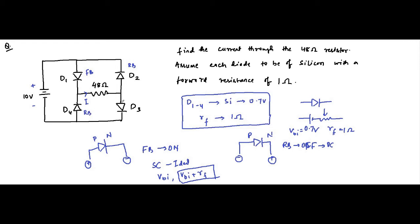D3 has P end connected to positive and N end connected to negative — it is forward biased. So D4 and D2 will be open circuited. D1 and D3 will be replaced with their equivalent circuit: built-in potential and forward resistance.